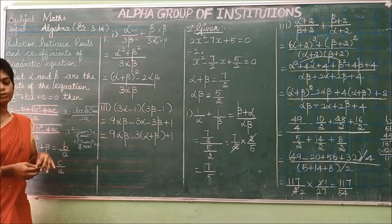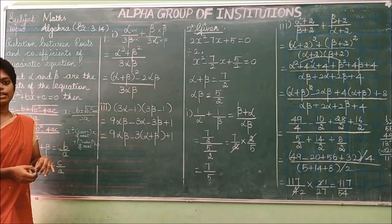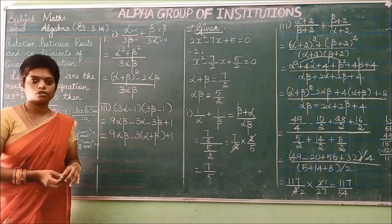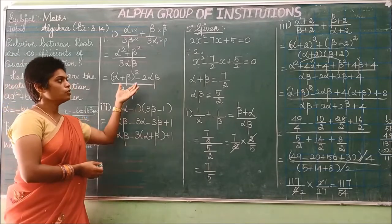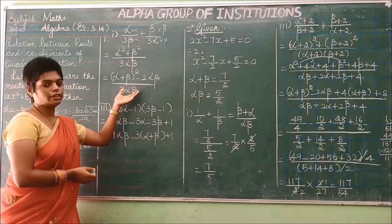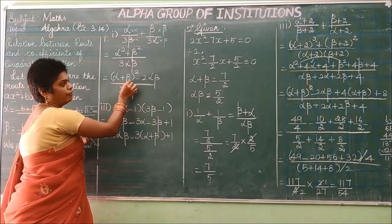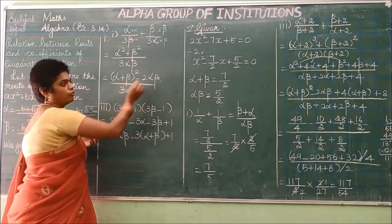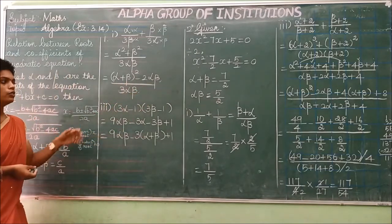Use the formula A² + B² = (A+B)² − 2AB. Substituting, alpha² + beta² becomes (α+β)² − 2αβ. The result is now expressed in terms of alpha plus beta and alpha times beta, which is the required form.